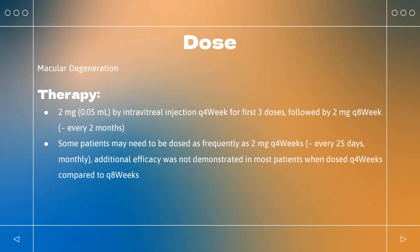Dose. Macular Degeneration. Indicated for treatment of neovascular (wet) age-related macular degeneration (AMD). Eylea: 2 mg (0.05 ml) by intravitreal injection every 4 weeks for the first 3 doses, followed by 2 mg every 8 weeks (every 2 months). Some patients may need dosing as frequently as every 4 weeks; however, additional efficacy was not demonstrated in most patients when dosed every 4 weeks compared to every 8 weeks.